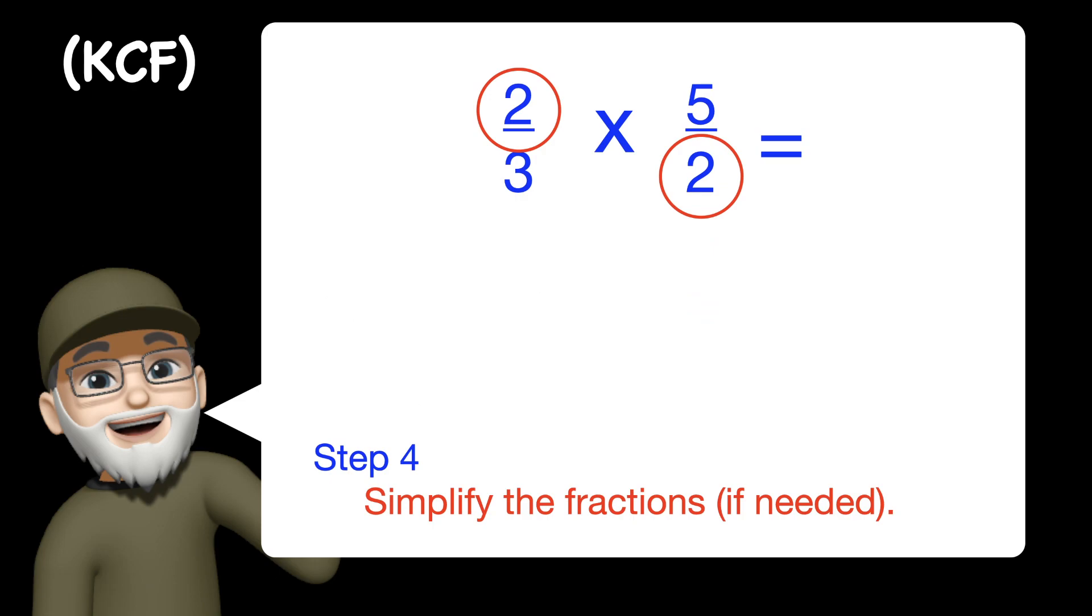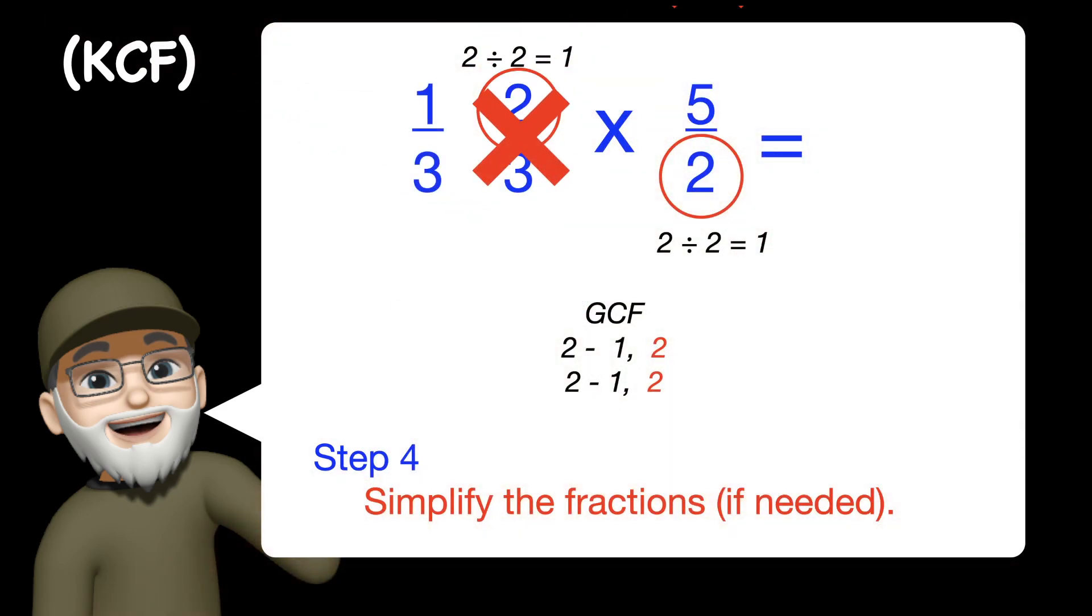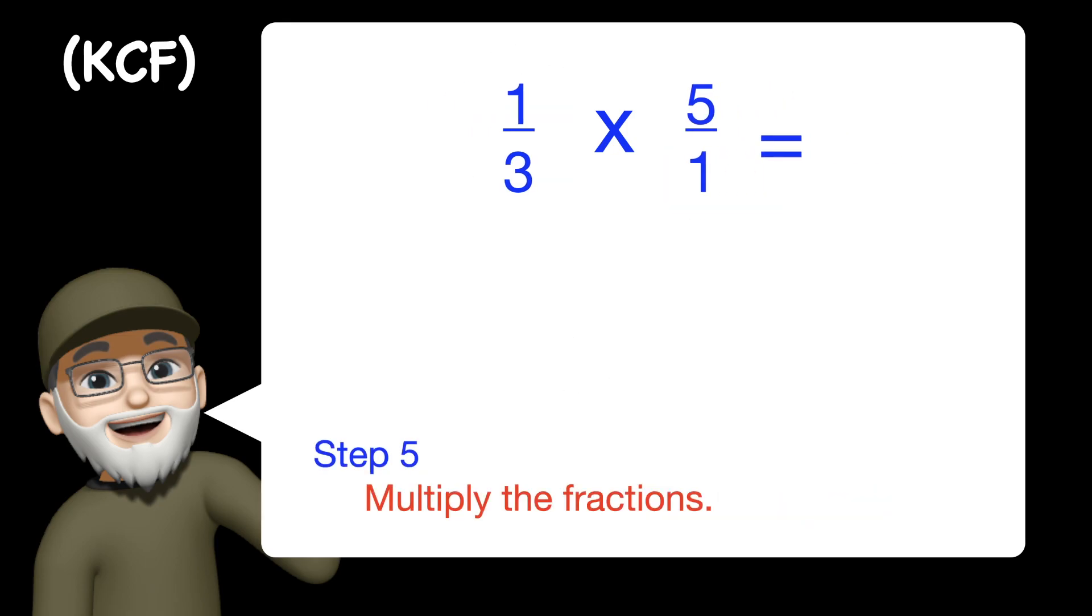It's easier to simplify now, and the only thing we can simplify would be the 2 because the greatest common factor of 2, and when you do your work there and you divide it, you're going to have one third times 5 over 1. Multiply, you're going to come up with 5 over 3.